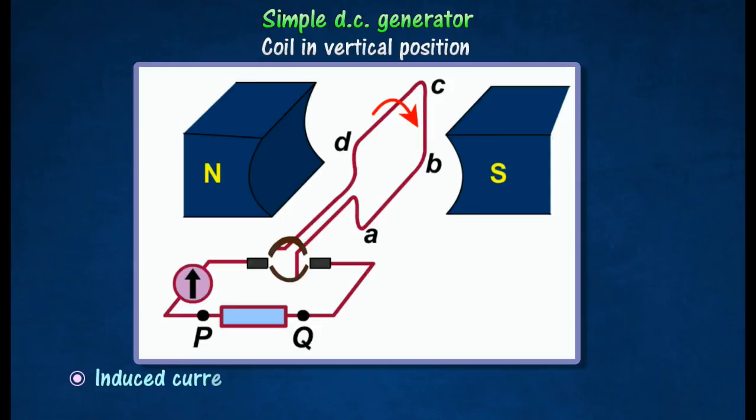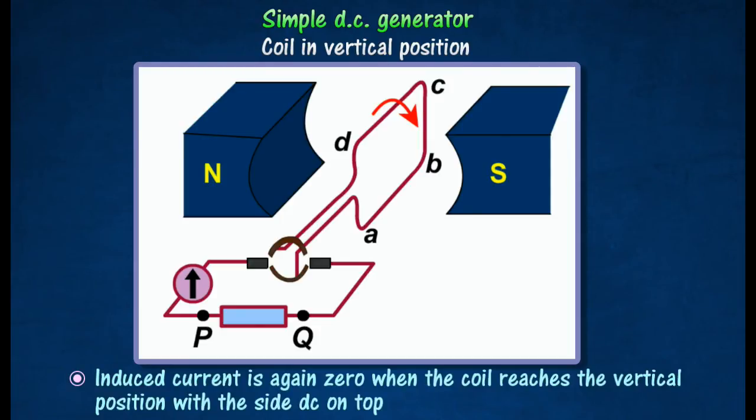The induced current will decrease as the coil continues to rotate and is again zero when the coil reaches the vertical position with the side DC on top.